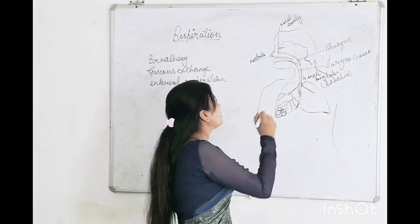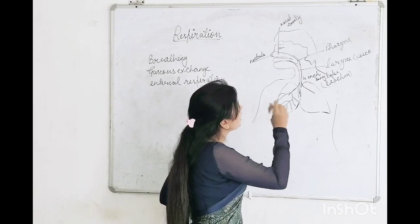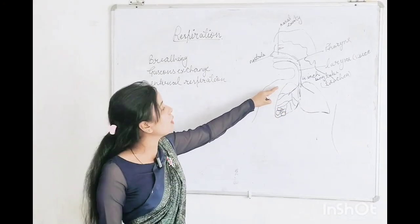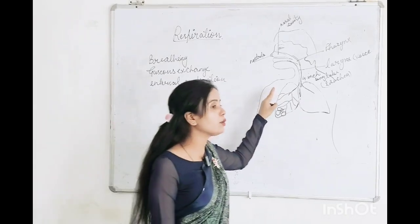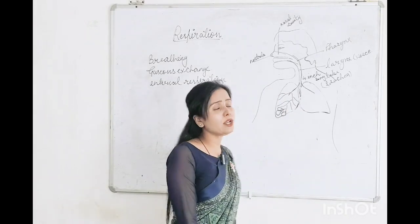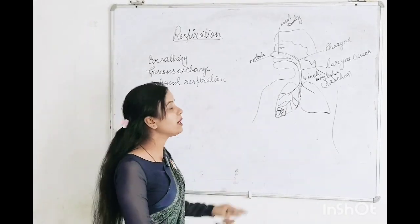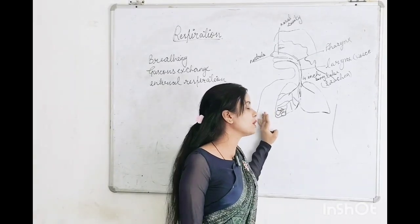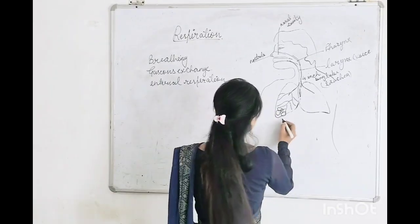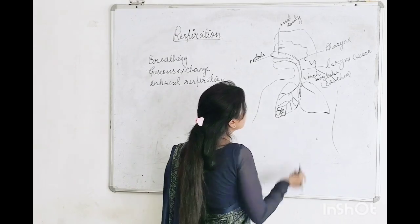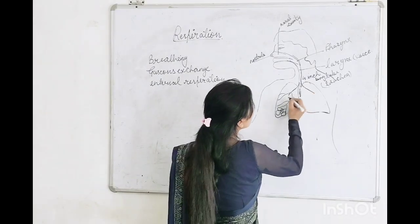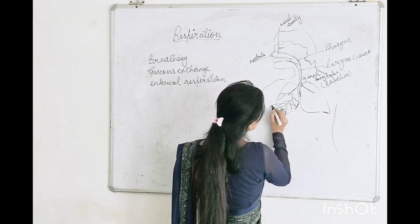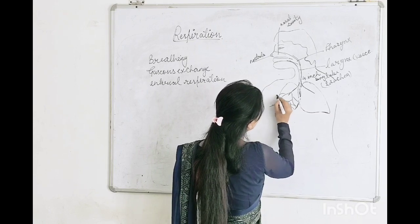From trachea, it divides into two branches called bronchi, then into secondary bronchi, then further into tertiary bronchi, and ultimately into the alveoli — the cluster-like structure present in the lungs. The lungs are surrounded by a network of blood vessels.